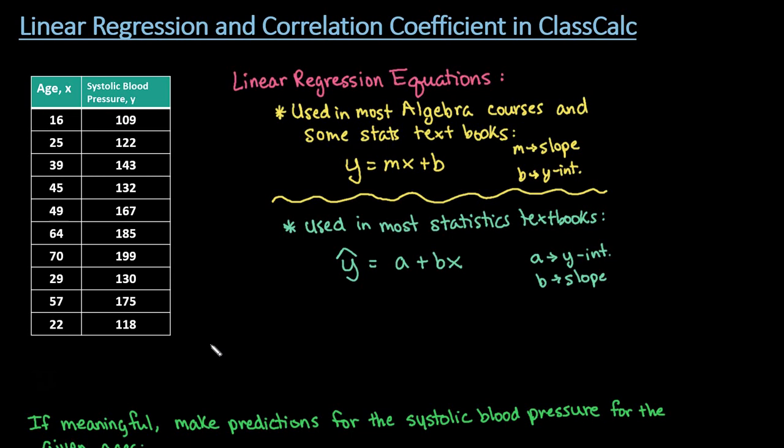The linear regression equation is also known as the line of best fit. Basically, the line of best fit minimizes the distance each of the points is from the line, taking into account all of the data points. Doing this by hand is a very long process and you can make a lot of mistakes, so it's a lot better to use technology to help you find your line of best fit.